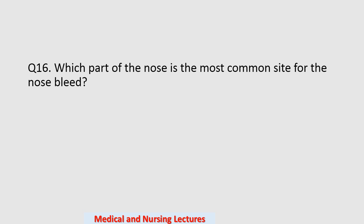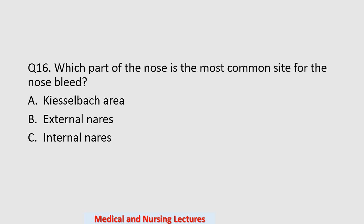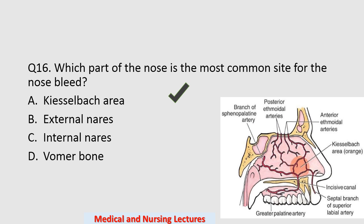Question number sixteen: which part of the nose is the most common site for a nosebleed? Options are Kiesselbach's area, external layers, internal layers, or vomer bone. The correct option is Kiesselbach's area.